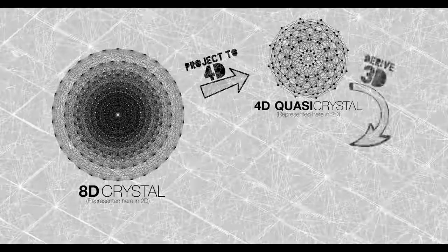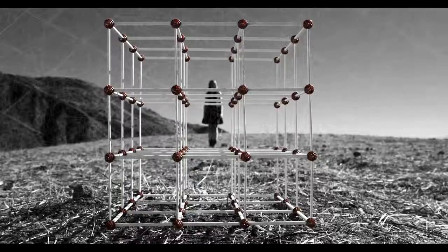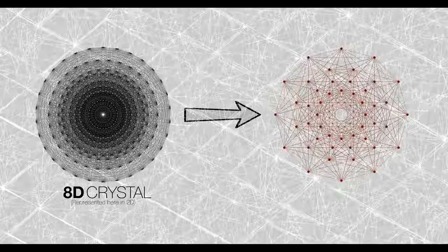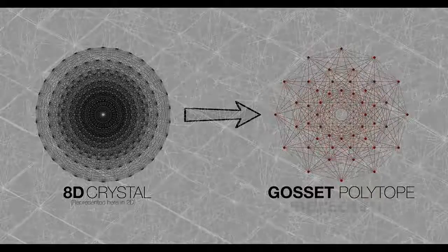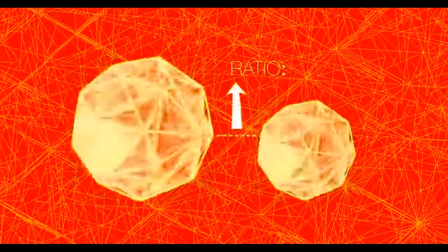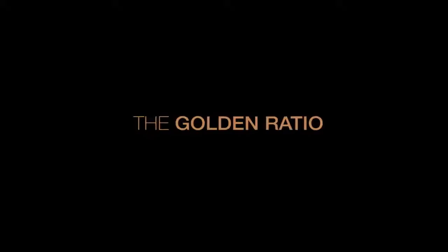To generate that 3D quasi-crystal — the substructure at the pixelated fabric of reality — we project this 8D crystal to 4D, and then convert that to 3D. Just like the basic cell shape of the 3D cubic lattice is the cube, the cell shape of the E8 lattice is an 8D shape with 240 vertices, called the Gossett polytope. When the Gossett polytope is projected to 4D, it becomes two identical shapes of different sizes. The ratio of their sizes is a unique number — 0.618, also known as the golden ratio.